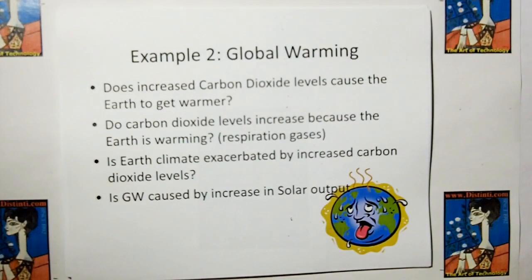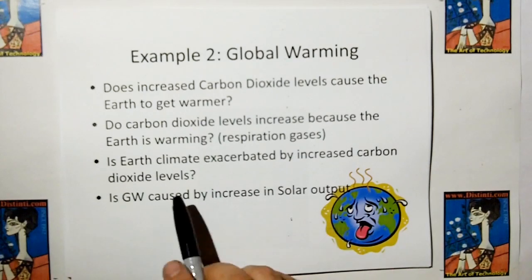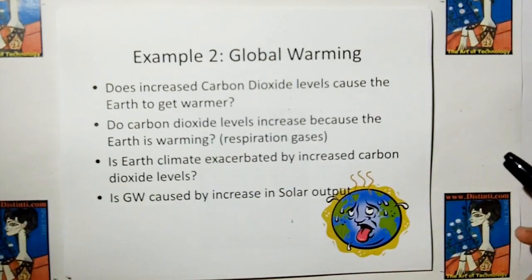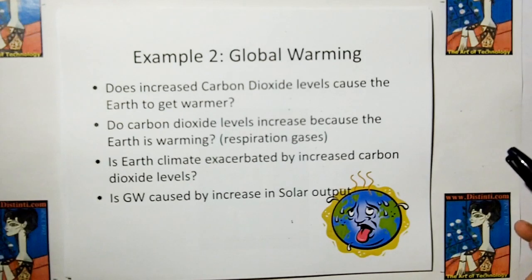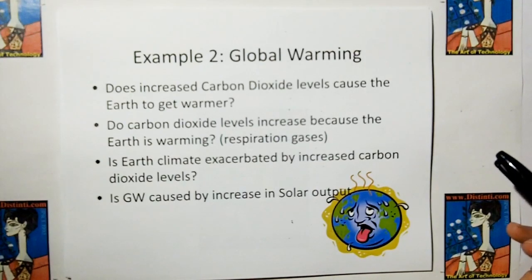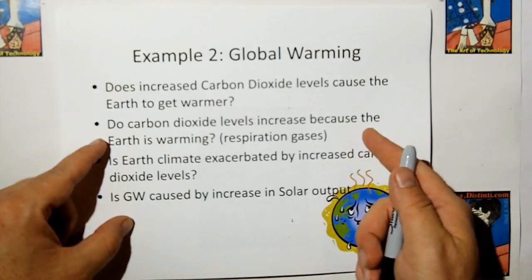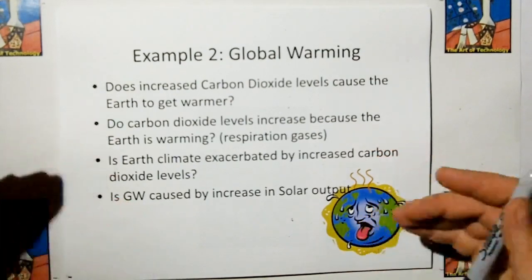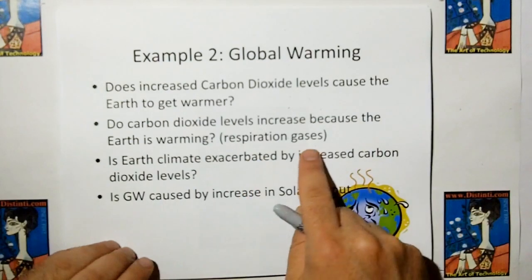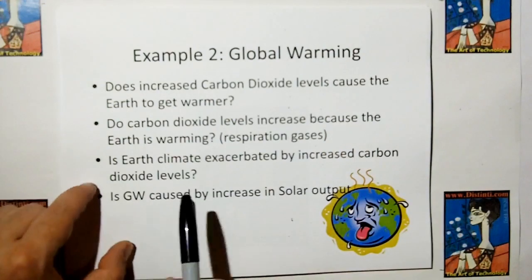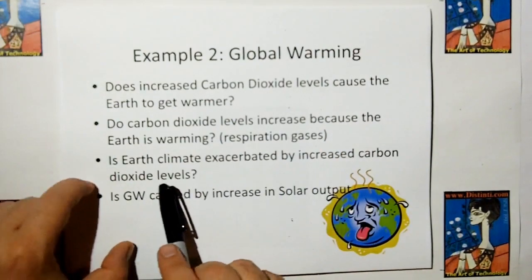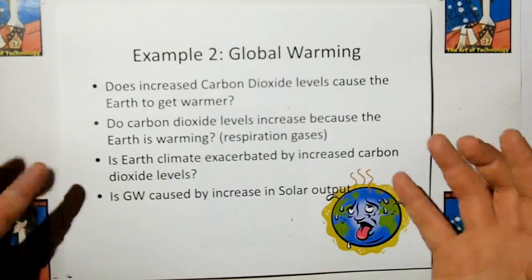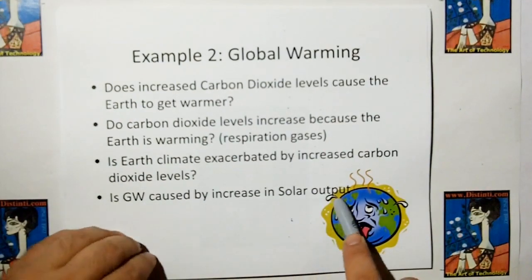Here's an example to global warming. Does increased carbon dioxide levels cause the Earth to get warmer? Or do carbon dioxide levels increase because the Earth is warming? This makes more sense to me, and I'll tell you why. Because back during the Ice Age, something had to produce carbon dioxide to start the Ice Age to thaw. Where if you do it the other way around, as the ice started receding, there was more open ocean and more open grasslands for creatures to expand and grow into. And therefore, the respiration gas has increased. So it could be the other way around. I think it's this way.